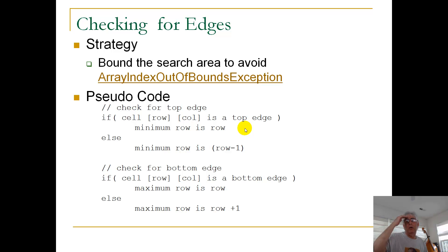So the minimum row where I can check is just row. Notice the else, this is just the happy day case. The minimum row is row minus 1, as we looked at a moment ago.